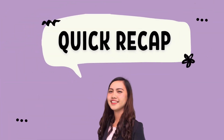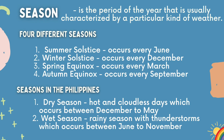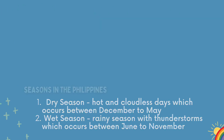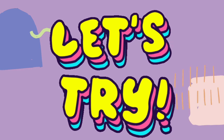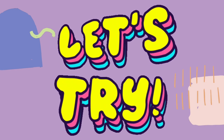That's it! Let's have a quick recap. In this video, we discussed the season. The four different seasons are: summer solstice, winter solstice, spring equinox, and autumn equinox. The seasons in the Philippines are the dry season and wet season. Now let's try answering a five-item quiz about season. You have a minute to answer. Good luck!